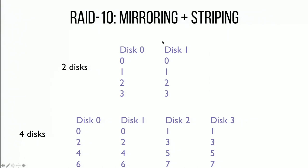People usually combine mirroring and striping. Mirroring is RAID 1, striping was RAID 0. You'll sometimes see RAID 10, which is RAID 1 and 0 together — both mirroring and striping. With two disks you can do pure mirroring; with four disks you can do a combination where you stripe across two groups and replicate within each group. For shorthand, I'll refer to this as RAID 1 with striping when we have more than two disks.